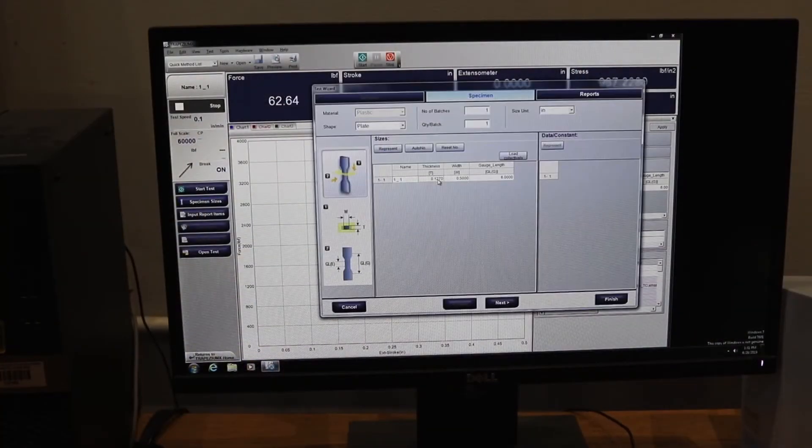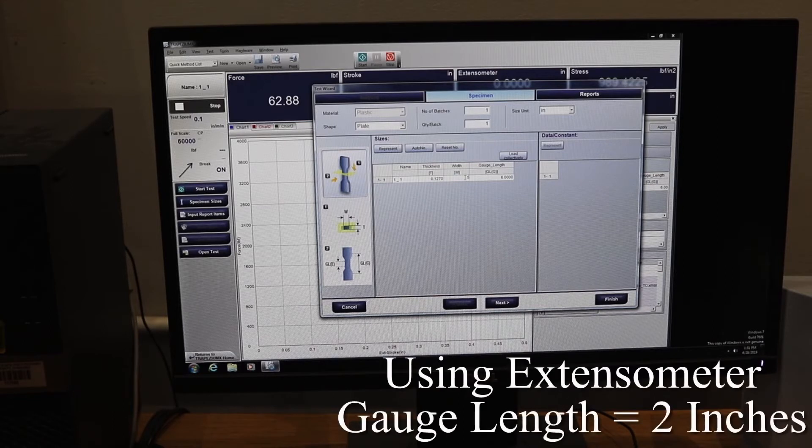Click on specimen size. For the gauge length, since we are using the extensometer, it will be 2 inches.